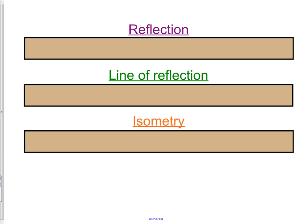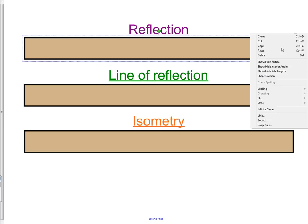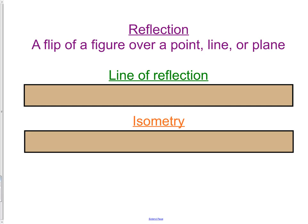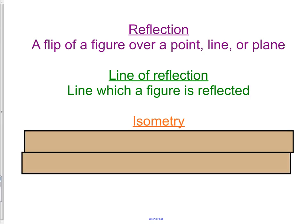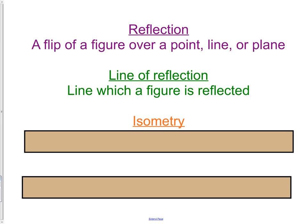A reflection. There are three things we need to discuss when it comes to reflection. First off, a reflection is a flip of a figure over a point or a line or a plane. So a figure could be flipped over any one of those three things. A key part when we're talking about reflections is the line of reflection. It's a line which a figure is reflected over.